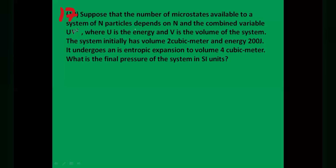Next question: what is the number of microstates available to a system of N particles? The number of microstates Ω depends on N and the combined variable U·V², where U is internal energy and V is the volume. So Ω = N·U·V². The system initially has volume Vᵢ = 2 m³ and energy U = 200 J.